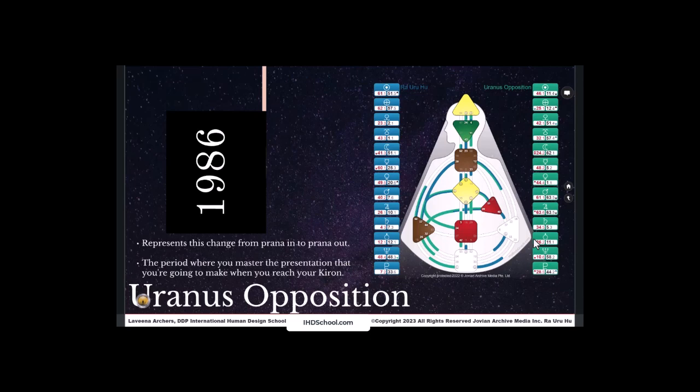This is a period where you master the presentation that you are going to make when you reach your Chiron return, your Chiron return, that flowering of the nine centered human being. The Uranus opposition, that time frame when you move in this path and this way of seeing from the past way of where you be and how you see into a new way of either being around things or seeing things in a way that is different and unique to you. So the flowering of one's developmental awareness as far as your maturing cycle.